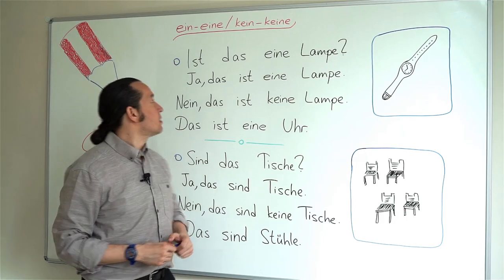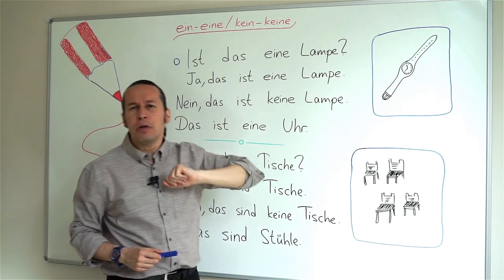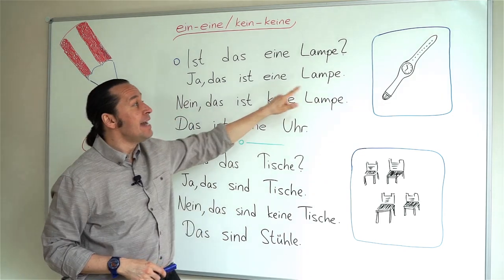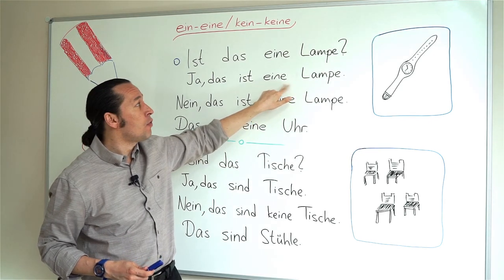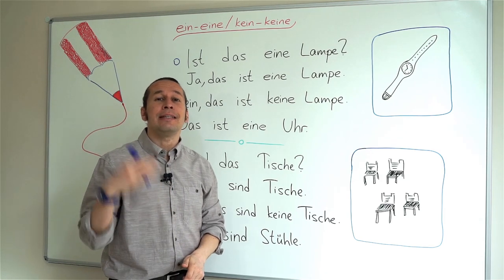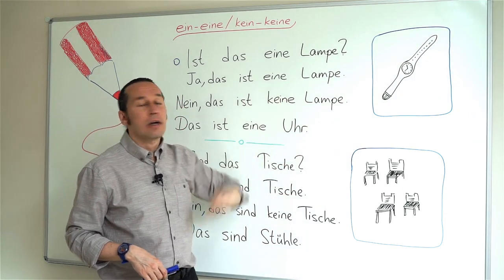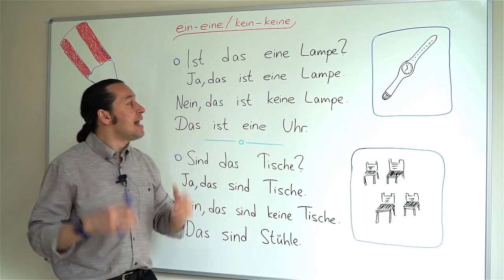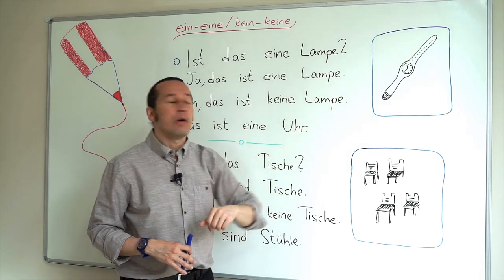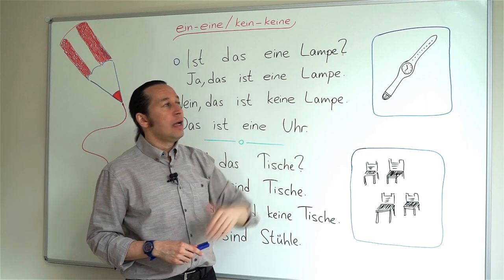Let's continue. 'Ist das eine Lampe?' — is this a lamp? If yes: Ja, das ist eine Lampe — because the article is 'die', so it's 'eine'. If no: Nein, das ist keine Lampe — 'keine' replaces 'eine' in the negative. Then: Das ist eine Uhr — this is a watch.